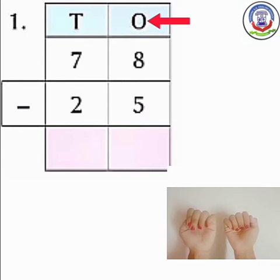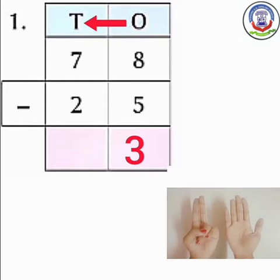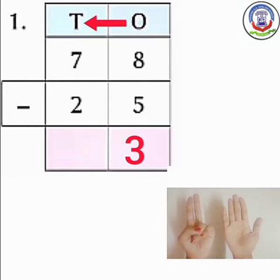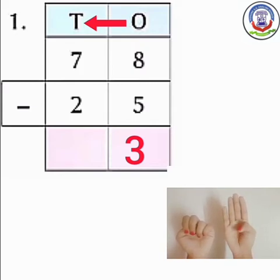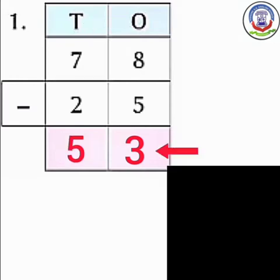So we will write here 3. अब हम 10s column में subtract करेंगे. Numbers are 7 and 2. Open 7 fingers and close 2 fingers. How many fingers are left? 1, 2, 3, 4, 5. So we will write here 5. The difference is 53.